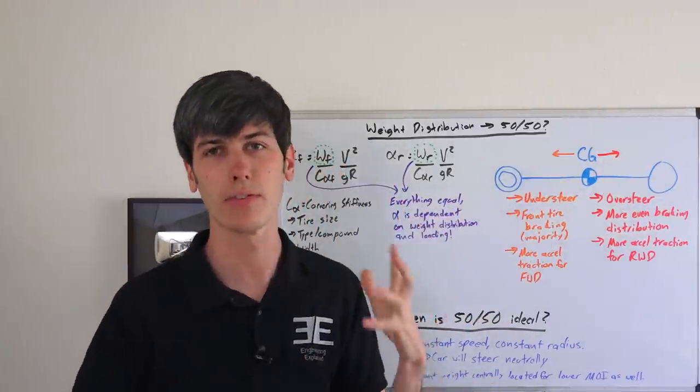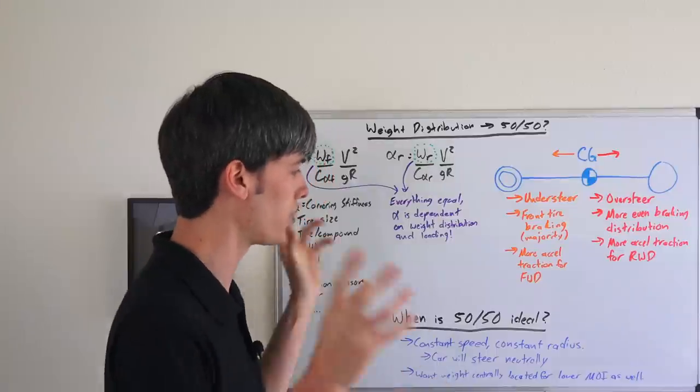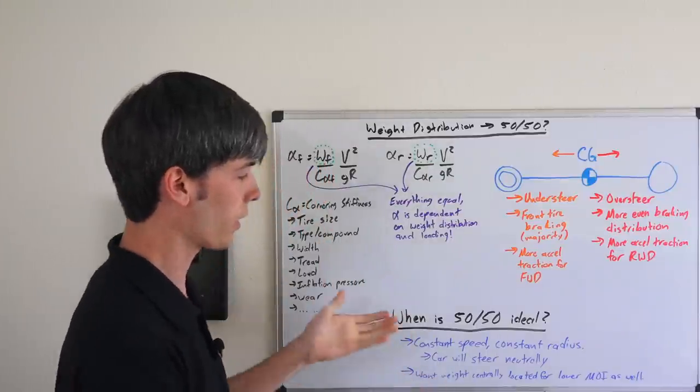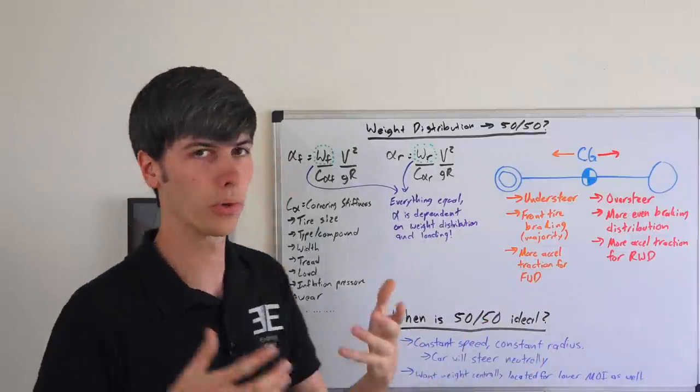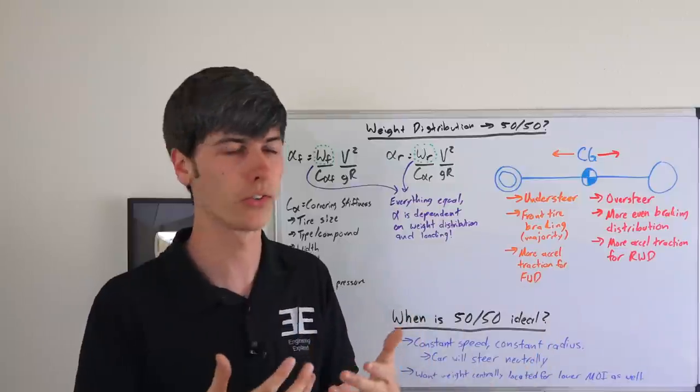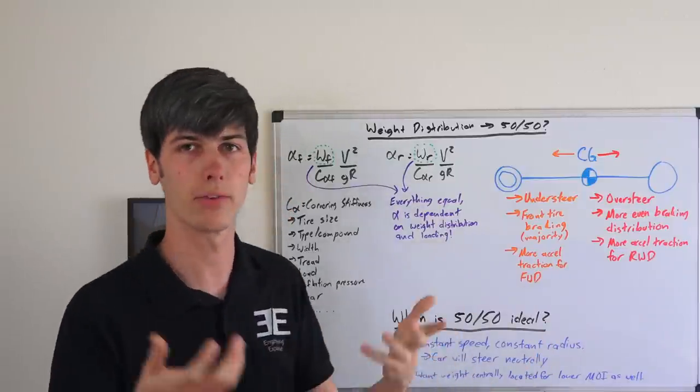So why is 50-50 always claimed to be the ideal weight distribution? Well, like I was saying, at a constant speed going around a constant radius corner, a car will steer neutrally - it won't understeer or oversteer, so it will behave very predictably.